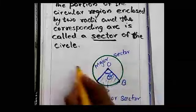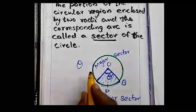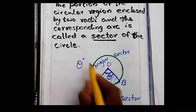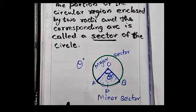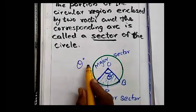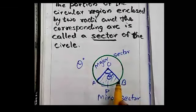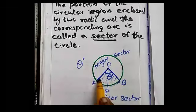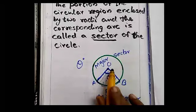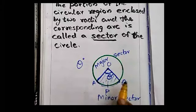Theta degree — theta is just a variable, just like x, y, z, etc. We are giving a measure of theta degree. So here the angle AOB is given as theta degree.